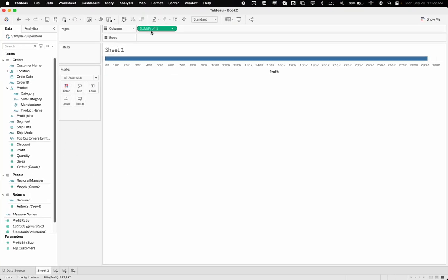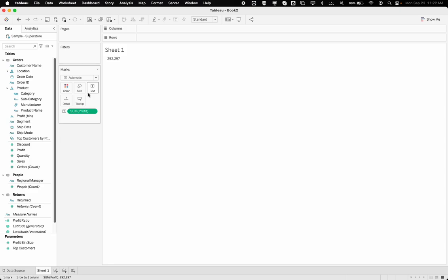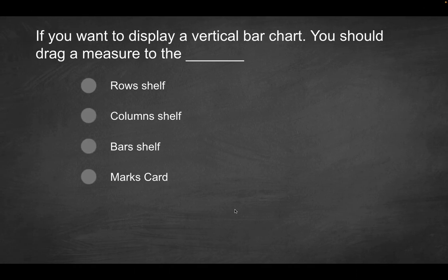So how about the marks card? If I was to drag profit onto like text within the marks card, all you're getting is just a mark of your aggregate profit. And I could drag this to other components within the marks card, not really going to help or get us to what we're looking for. So that's not the solution here. The only solution here is going to be the rows shelf.